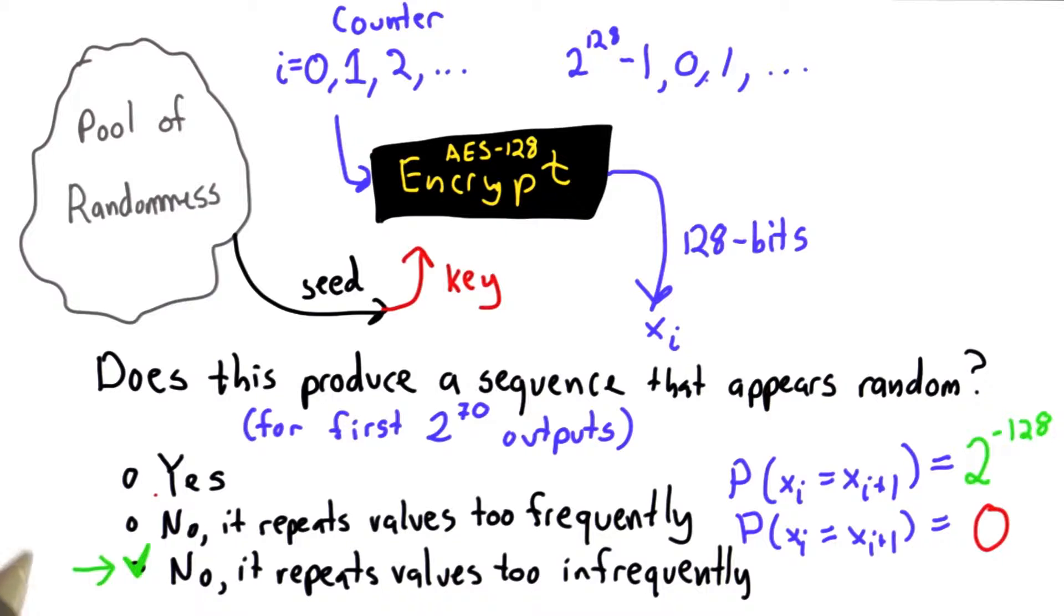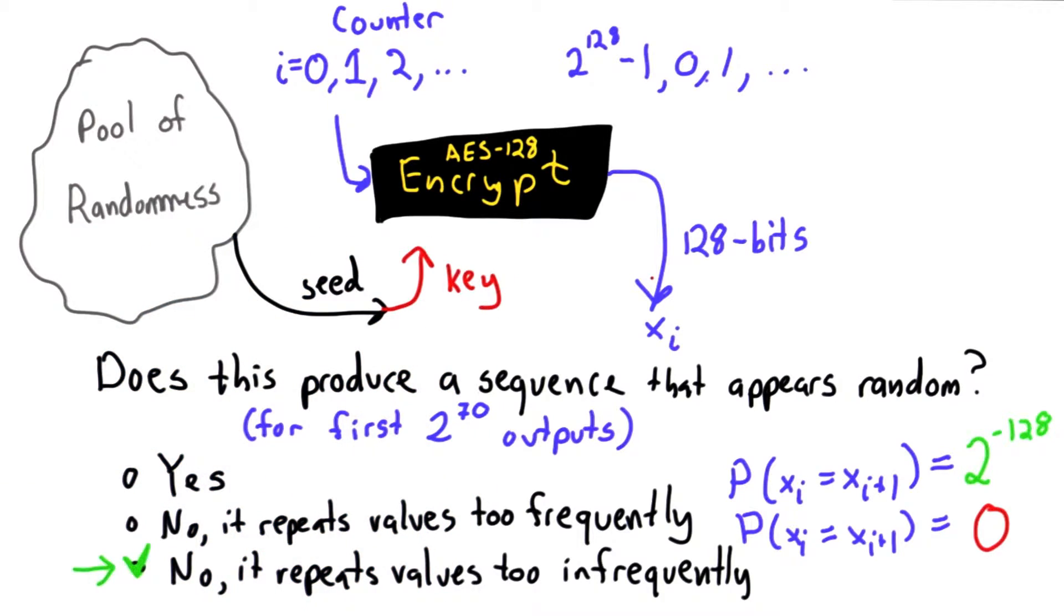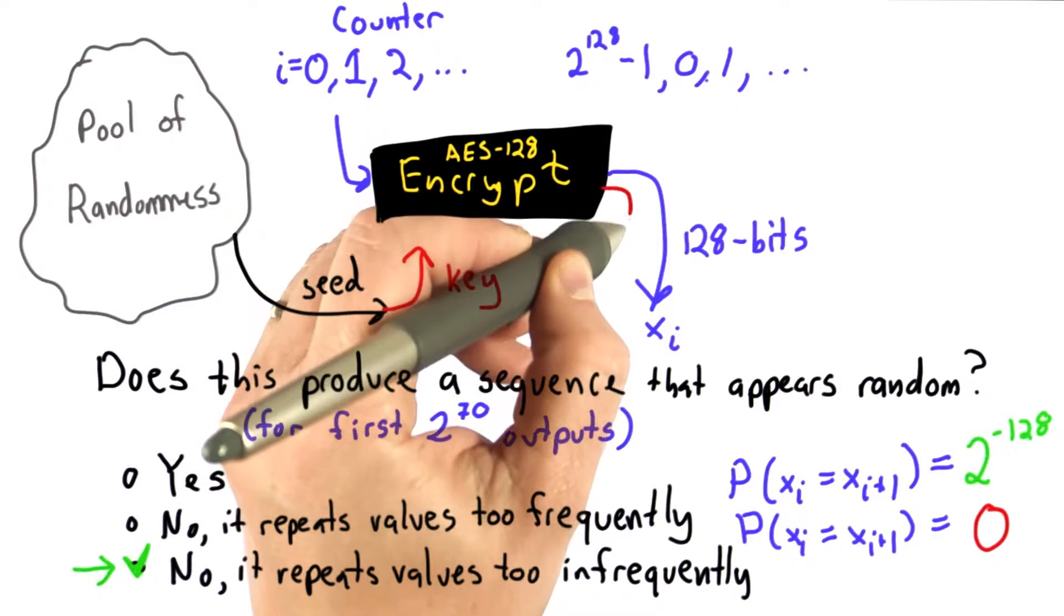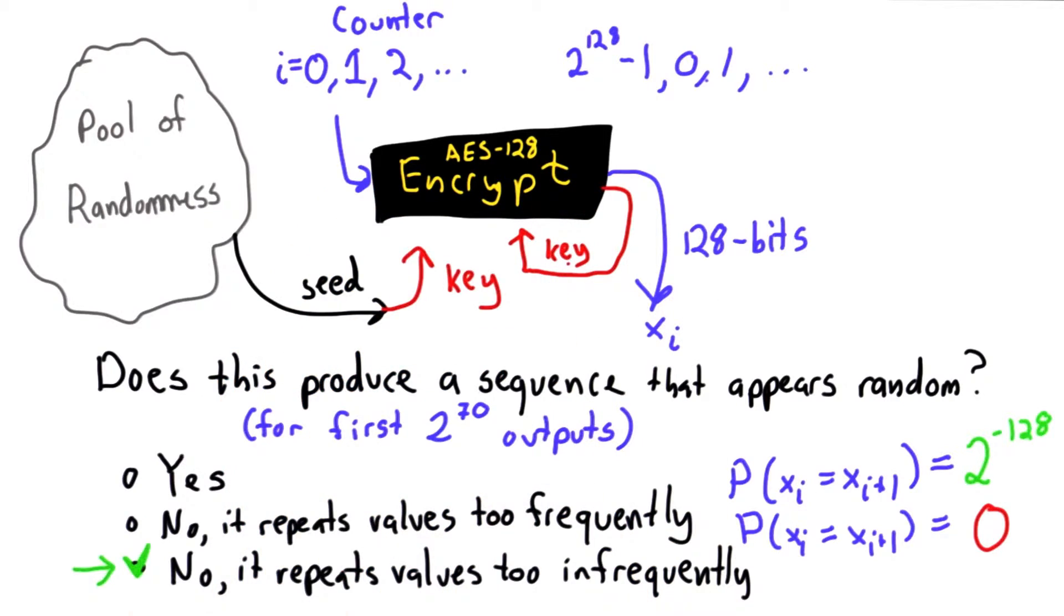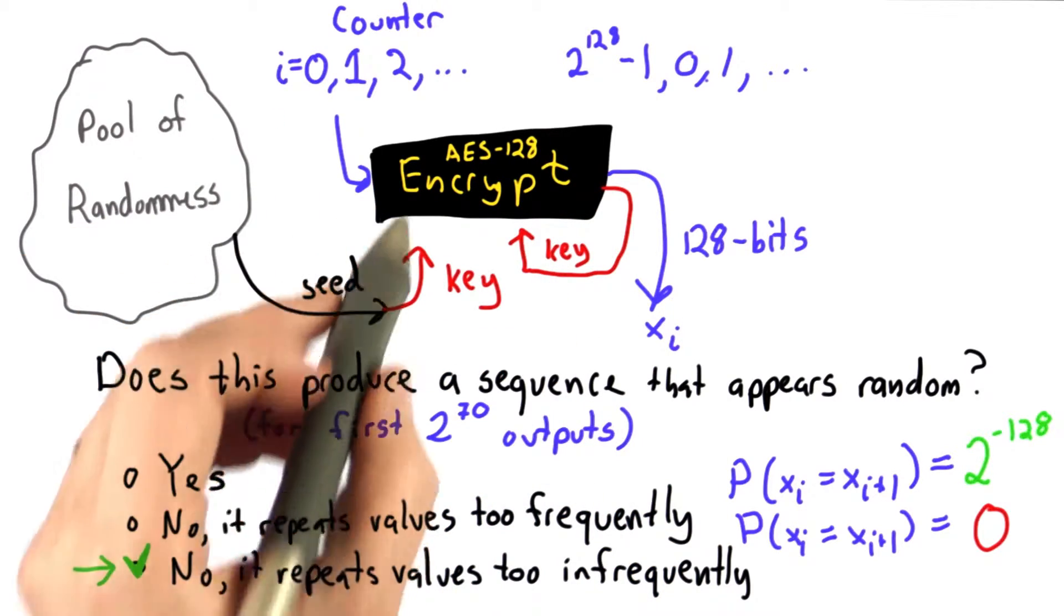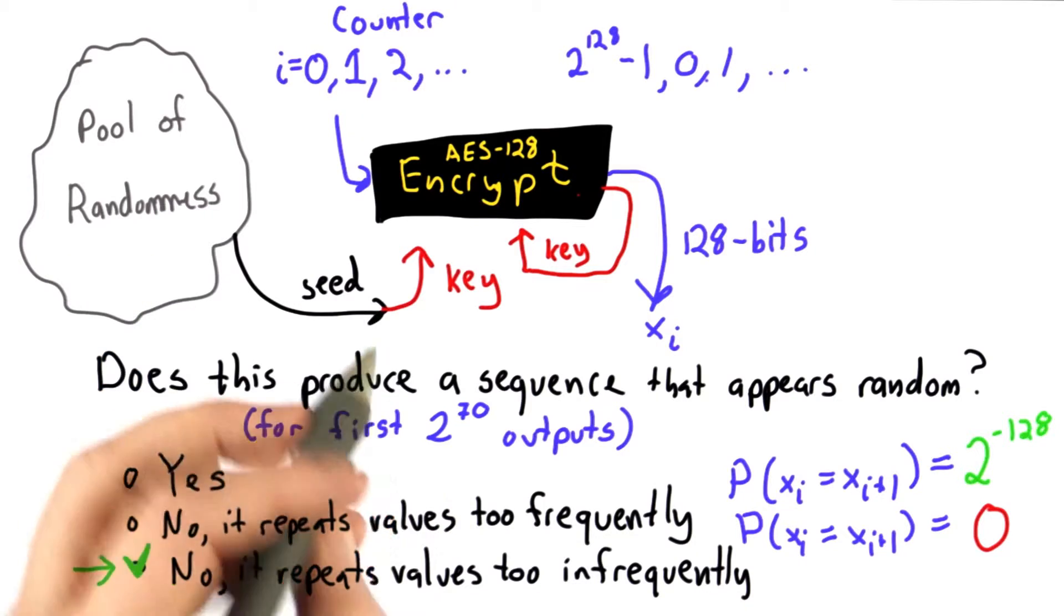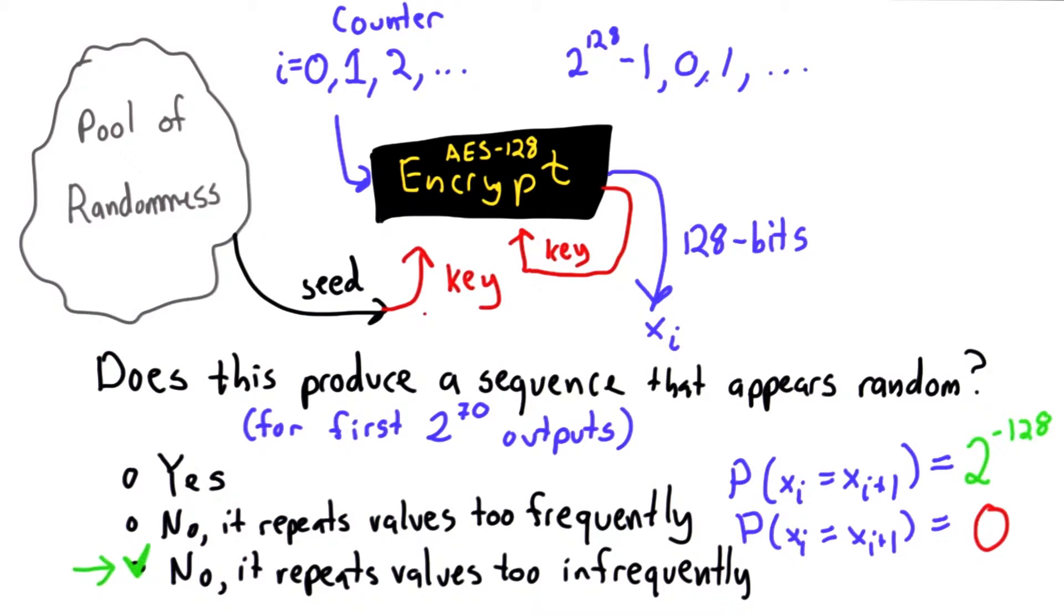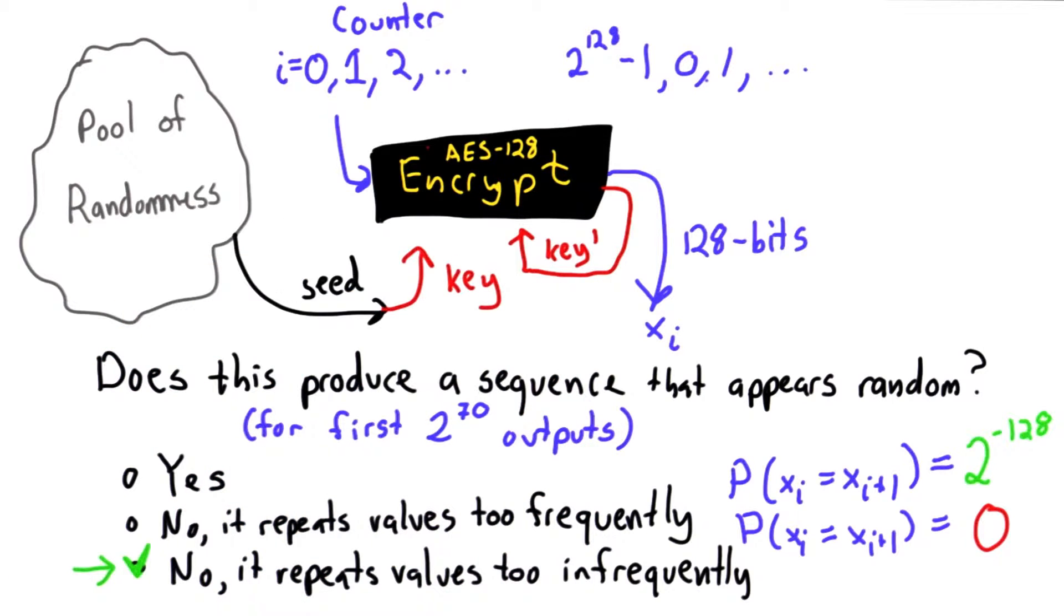To fix that, there's a couple things we could do. One is to occasionally change the key. After some number of outputs, we can take one output and instead of using it as an output, we use it as the new key. Even if we don't have any more randomness, we'll still change the key. That will affect this probability. It will no longer be 0. We'll start seeing values that have some probability of repeating what we saw with the previous key. We'll get a new key every few million outputs.